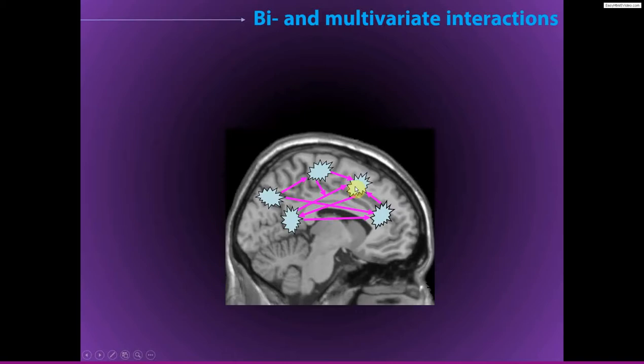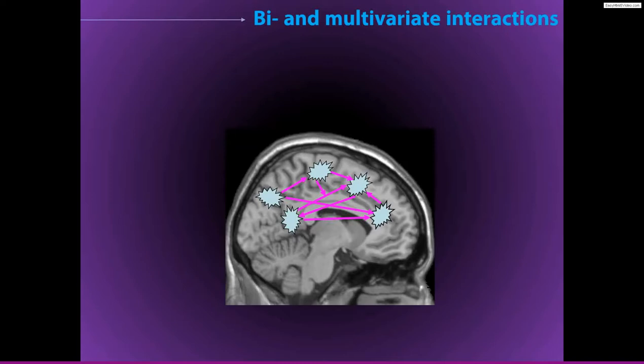But usually when we analyze connectivity in our data, we typically do something like this — we just look for connectivity between one pair or a different pair of brain regions or electrodes, however you're setting up the analysis. This would be an example of multivariate interactions, but here we often measure connectivity in terms of bivariate connections. And obviously this drawing is even an enormous simplification, and this is an even further simplification.